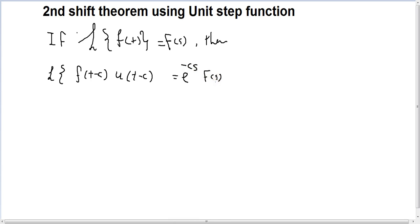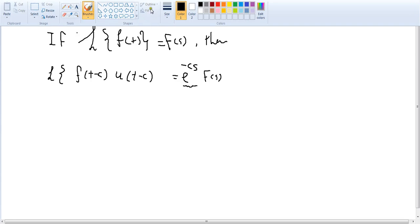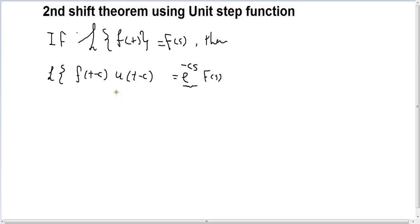So this is the same idea. If we know Laplace of the function F of T, then we're just going to multiply it by exponential to the power of minus CS. Let's have an example.